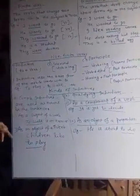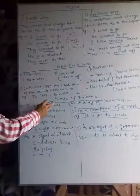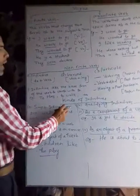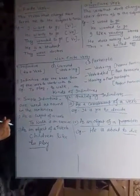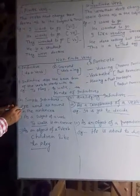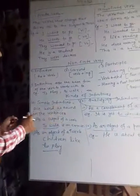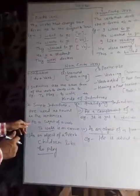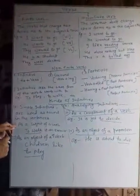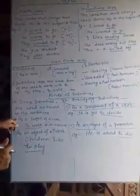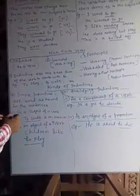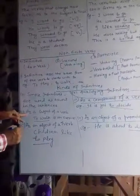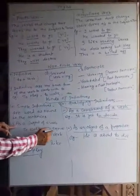There are two types of infinitives: simple infinitives and qualifying infinitives. Let's see what are simple infinitives. The simple infinitives are used as nouns in the sentence. Let's see some uses of simple infinitives. This infinitive may be the subject of a verb. For example, 'To walk is an exercise.' Here, 'to walk' is a subject.